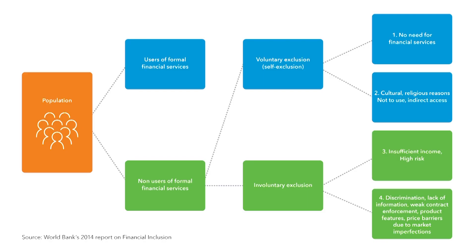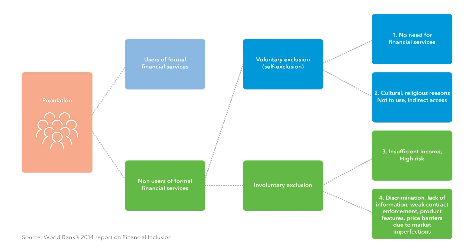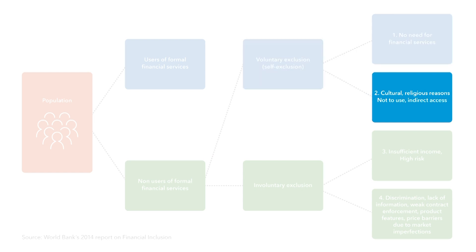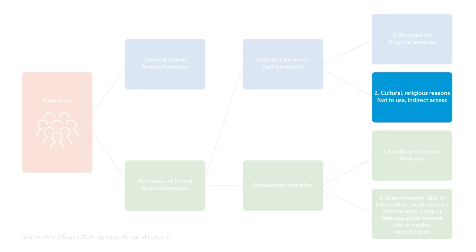Among the excluded population — those not using formal financial services — some choose not to do so, either because of cultural or religious reasons, or because they feel they have no need for financial services. One significant part of this group comprises those who have access to financial services through a family member and therefore do not need to have their own account.